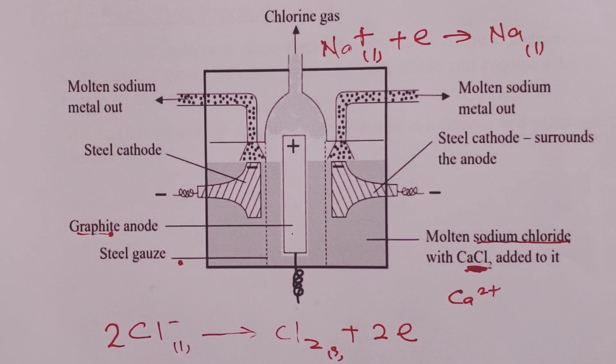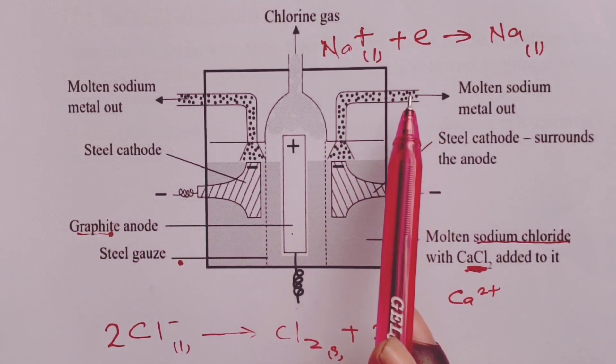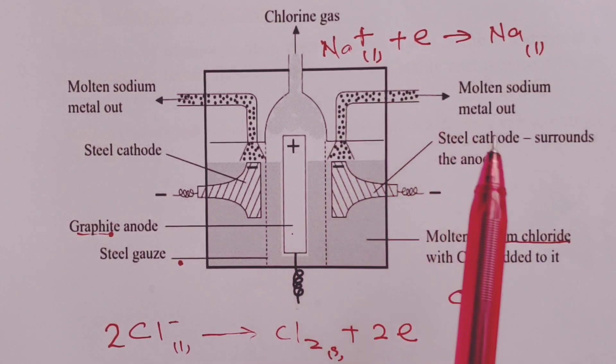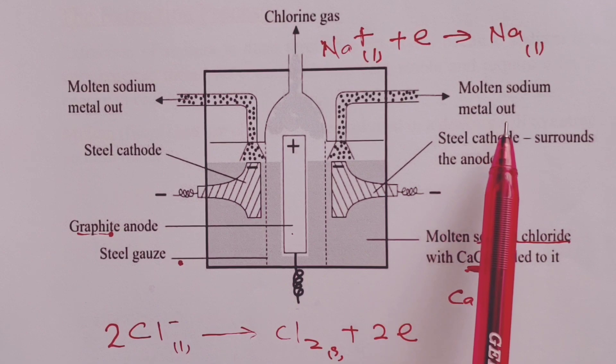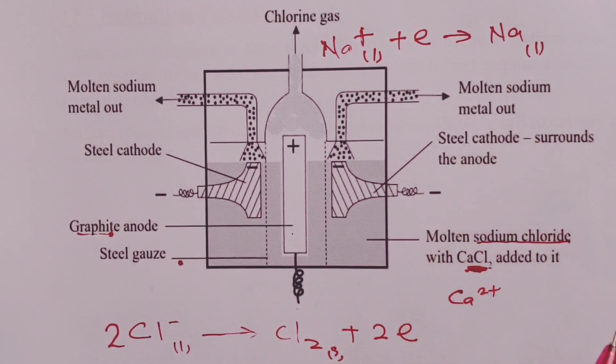And sometimes these calcium ions could be discharged at the cathode to produce an impurity in our metal, which is calcium metal. Now the two are always separable.